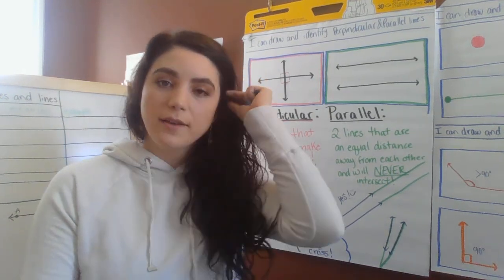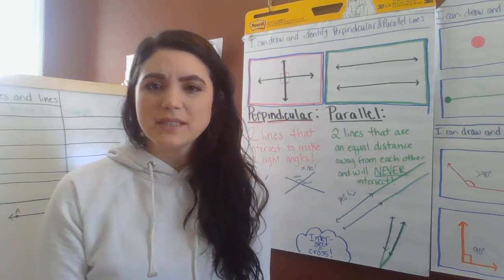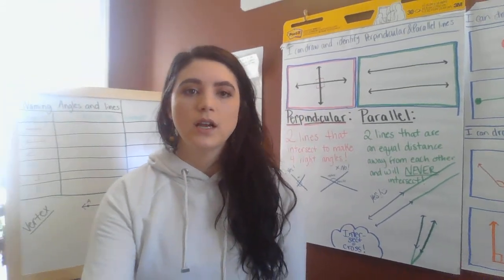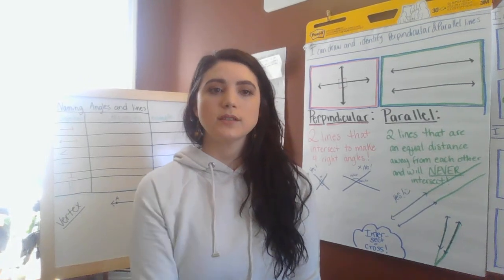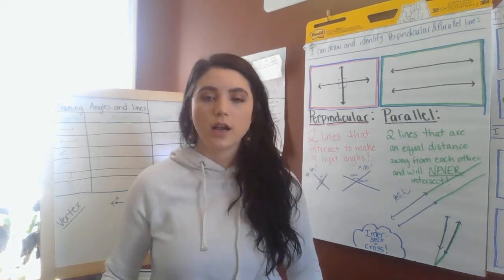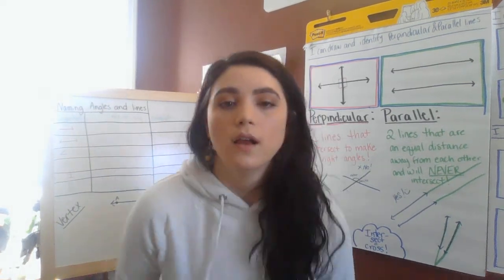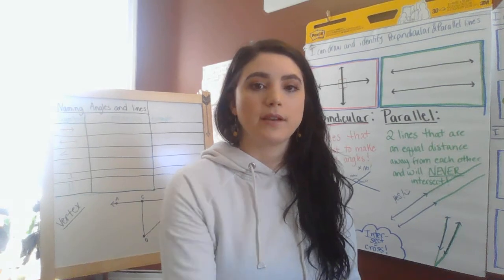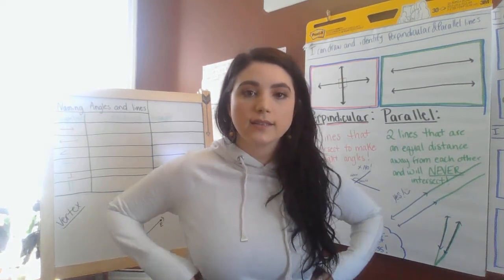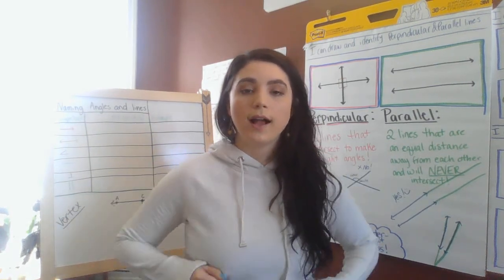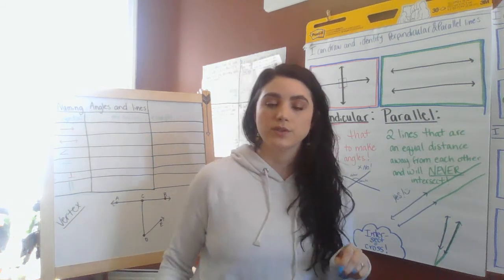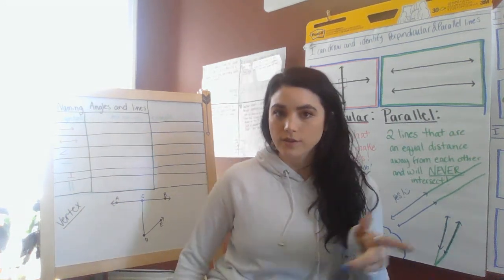So perpendicular lines cross to make right angles — intersect to make right angles. Parallel lines are equal distance apart the entire way and will never cross. Pretty simple stuff right there. Let's go over some things that were on your assignment from yesterday. It is due on Friday, so you have today and tomorrow to do it.